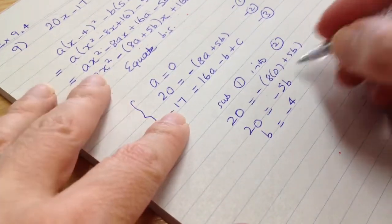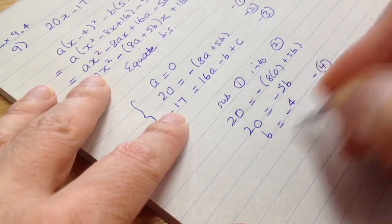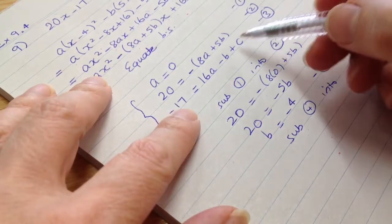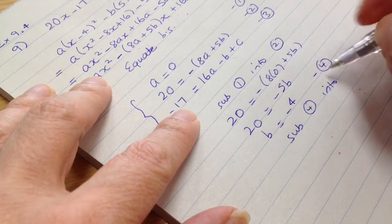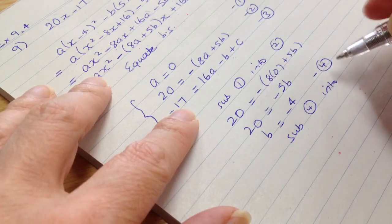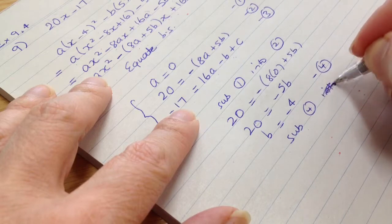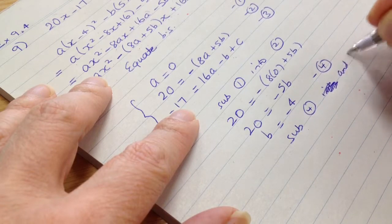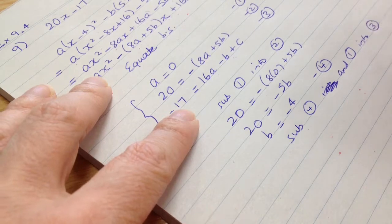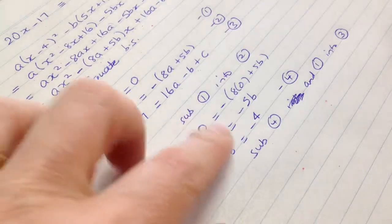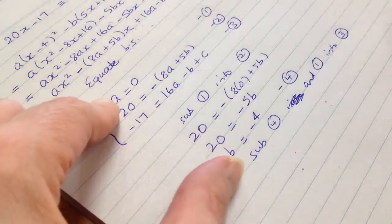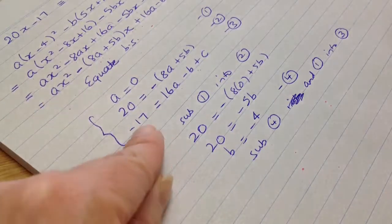All right, so now we're going to substitute, call that number four, sub 4 into 3. Okay, we're also going to substitute the a equals zero into there. All right, so sub 4, I should say, into 3, or sub 4 and 1 into 3. Okay? All right, so 4 is b equals 4, and 1 is a equals zero. We're going to substitute both those into 3.